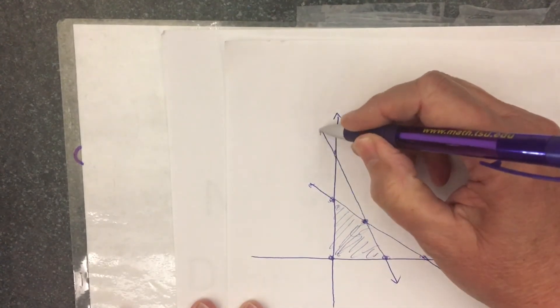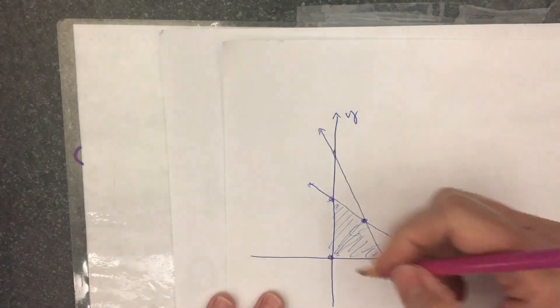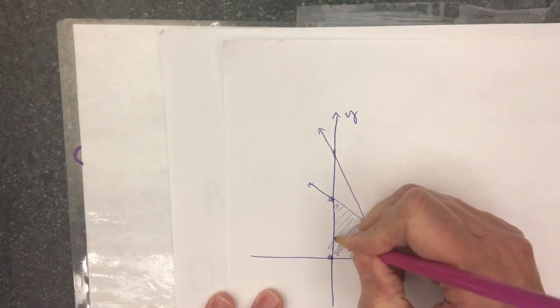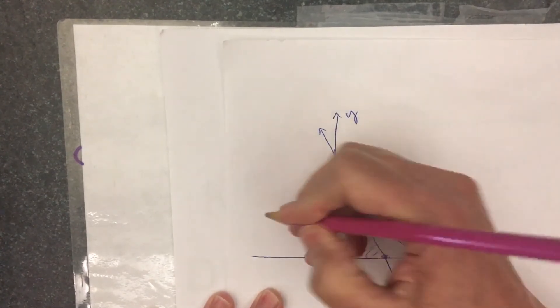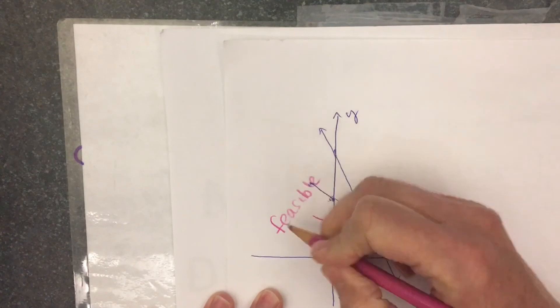Graph them by finding the x and the y-intercepts. We're going to shade what is called the feasible region. I'll put a little arrow to write that. Feasible region.